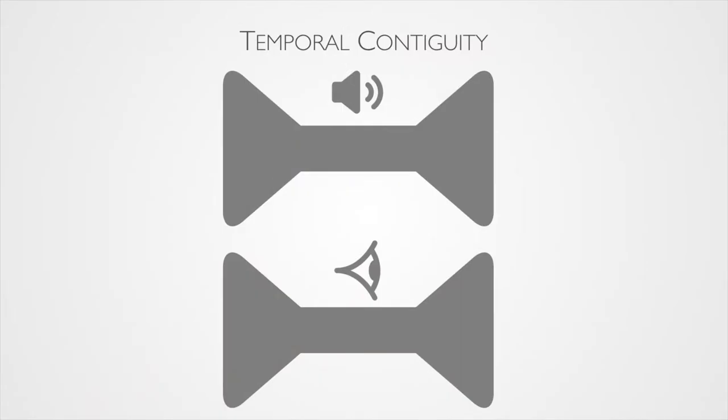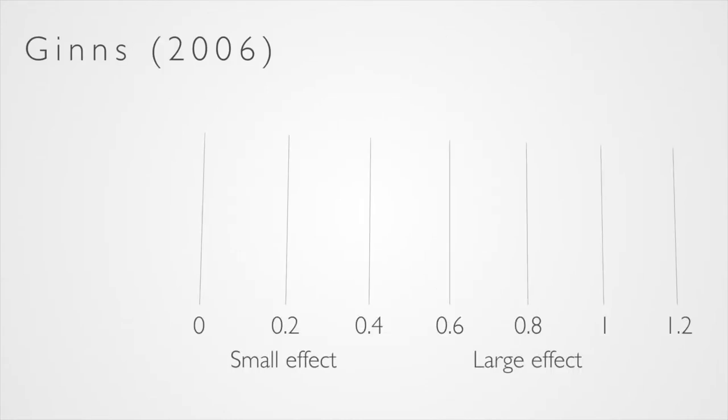This is called the temporal contiguity principle, which basically means to present information through the verbal and the visual channels at the same time. We talked about before when you were watching a movie, how frustrating it might be if the voice and the visuals aren't in time. So we're trying to make everything happen at the same time. And using this effect has been shown to significantly improve student learning.